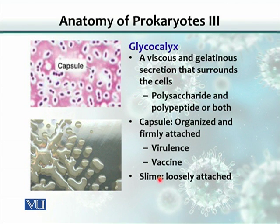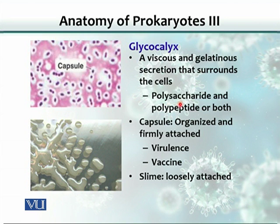Now let's talk about the glycocalyx. The glycocalyx is viscous in consistency and gelatinous — gel-like. It surrounds the cell, being secreted by the cell and adhering to the outer part of the bacterium. Composition-wise, it has polysaccharides and also proteins — a combination of polysaccharides and polypeptides. This composition varies from one organism to another.